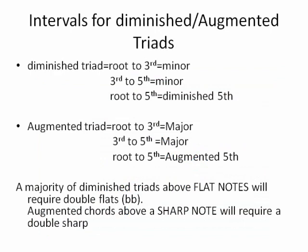An augmented triad is the opposite pattern from diminished: from root to third is a major third, and from third to fifth is another major third, making the root-to-fifth an augmented fifth. Augmented chords above sharp-rooted notes typically require double sharps. These rules are listed in Unit 6 of the textbook.